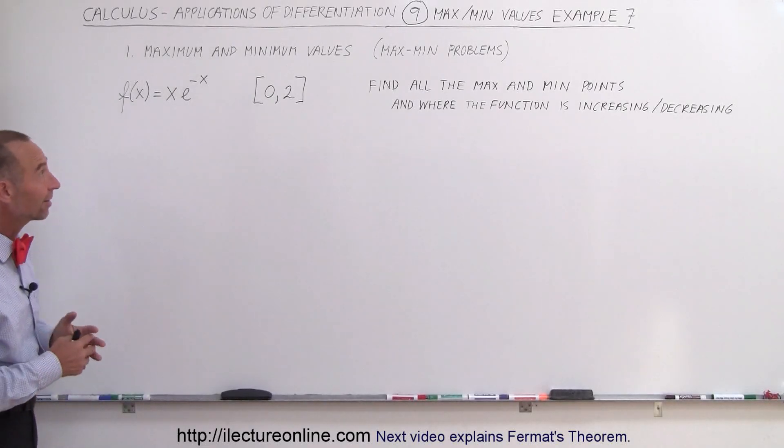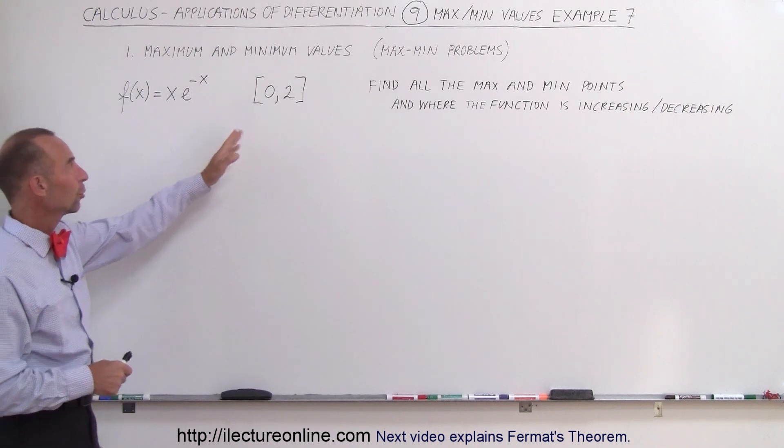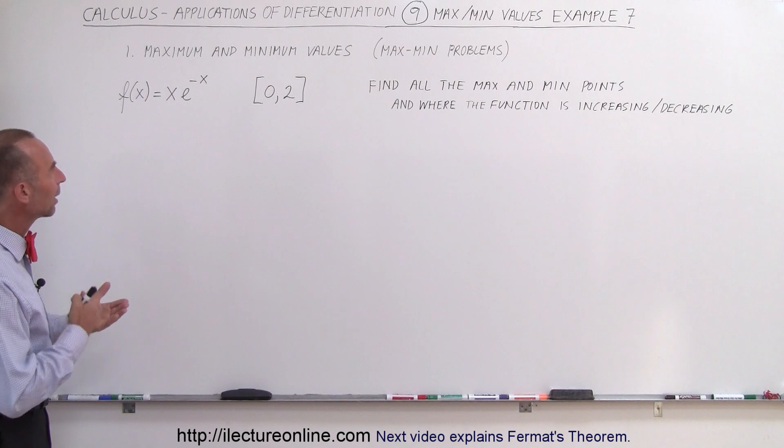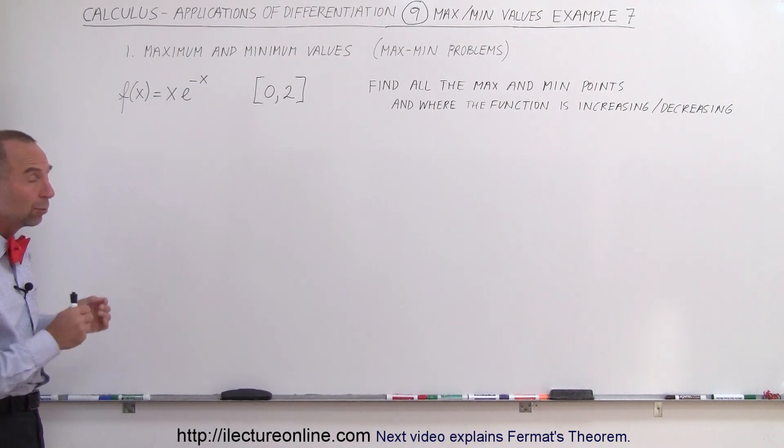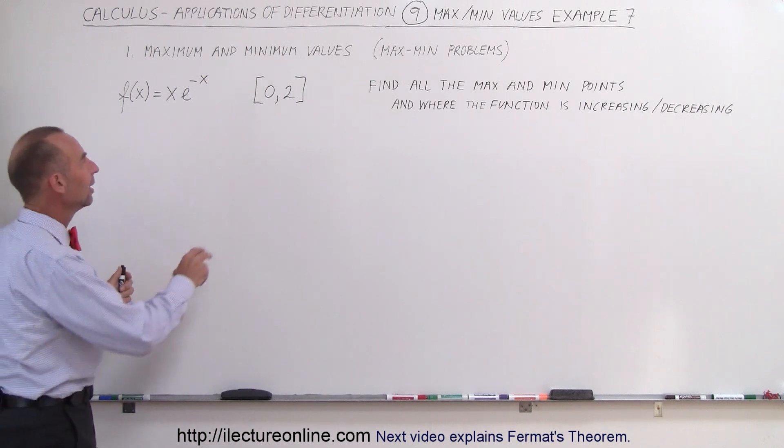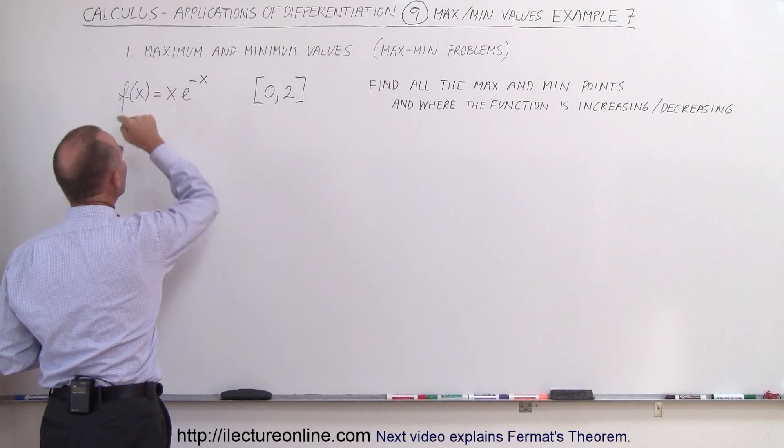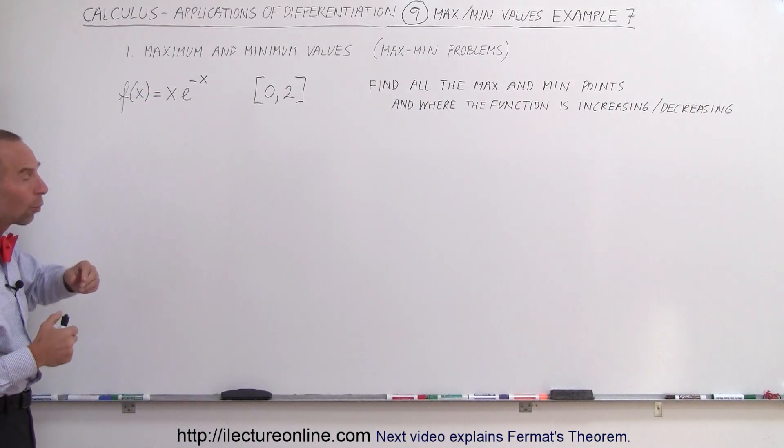Welcome to iLecture Online. Here our next example is a function limited by an interval from 0 to 2, including the endpoints - that's why we use square brackets. We're trying to find the local max and min and the absolute max and min, which means we also have to find the values derived from taking these endpoints and plugging them into the original function to see if the y value there is higher or lower than the local max or min we might find.